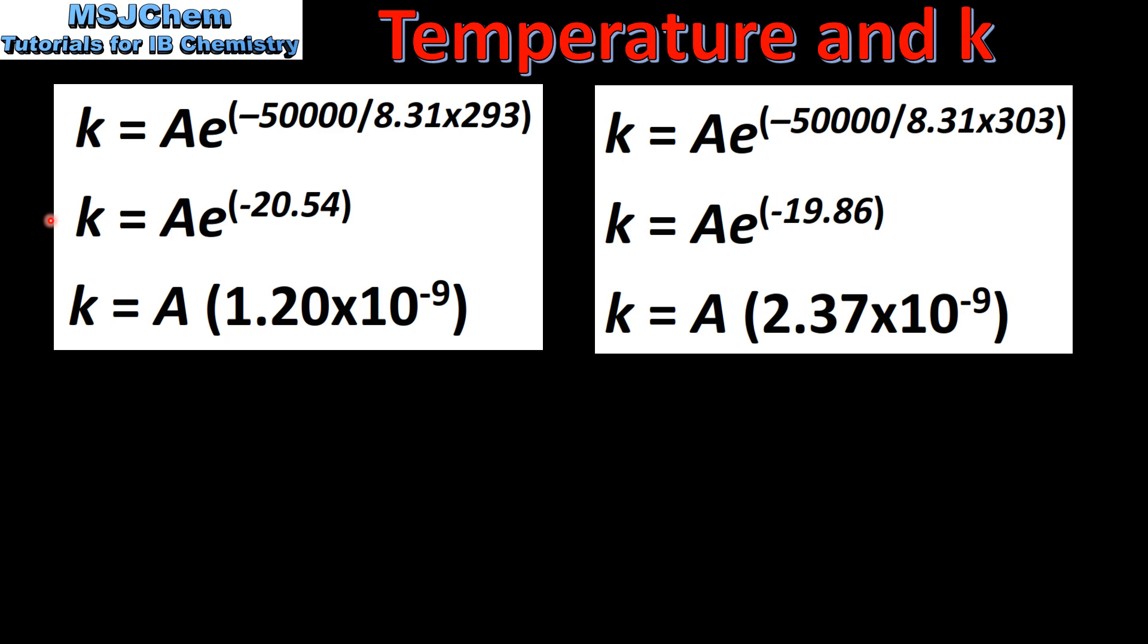Next we look at the effect of increasing the temperature by 10 K. In both these examples we are assuming an activation energy of 50,000 joules per mole. In the example on the left we have a temperature of 293 K. In the example on the right we have a temperature of 303 K.